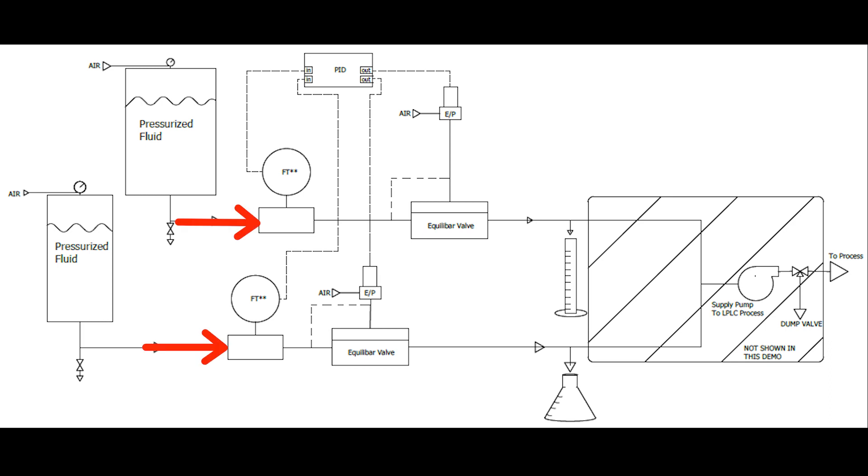From these tanks, the fluid flows along its own independent process line through a high accuracy flow meter upstream of an Equilibar FD04 one half inch sanitary valve.